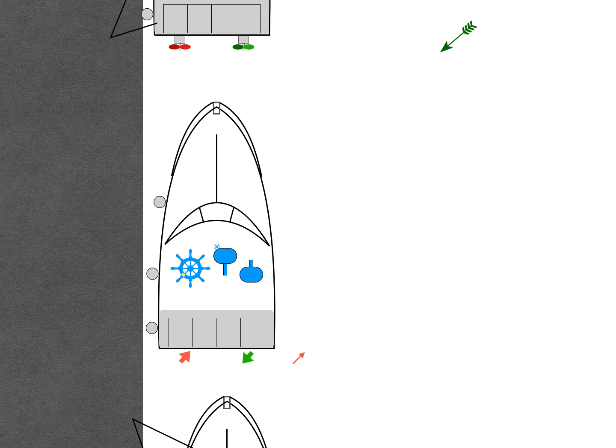If we put that vector back over the centre of the boat we can see what's going to happen. Of course the boat is going to move forward and to starboard.